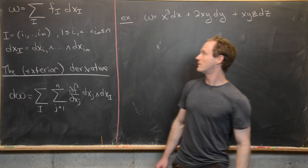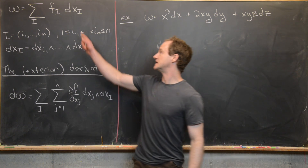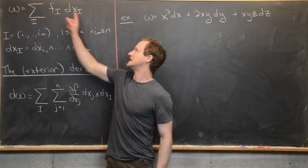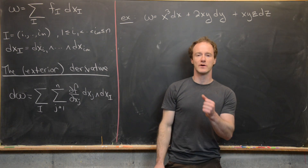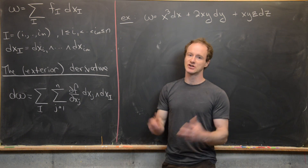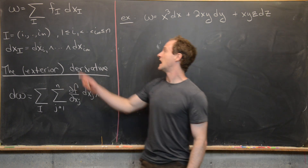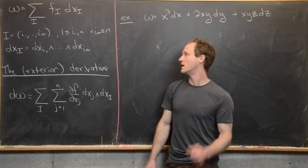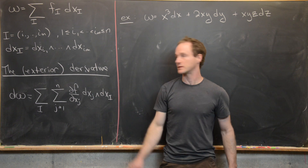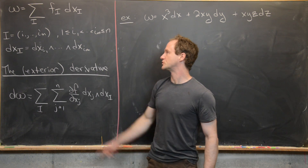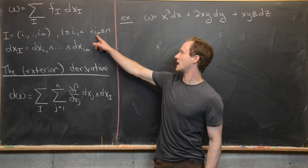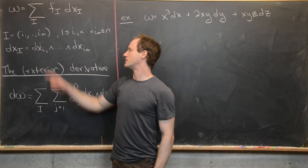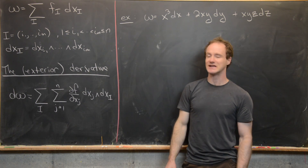So let's recall that an M-form on R^n is defined as the sum over a multi-index i of f_i dx_i, where those f_i's are smoothly differentiable functions. The multi-index i goes from i1 to im, with 1 ≤ i1 < i2 < ... < im ≤ n.